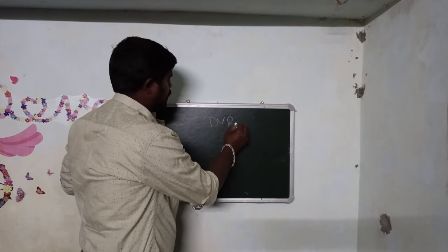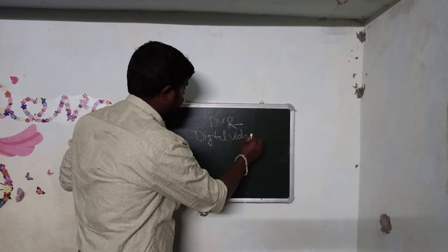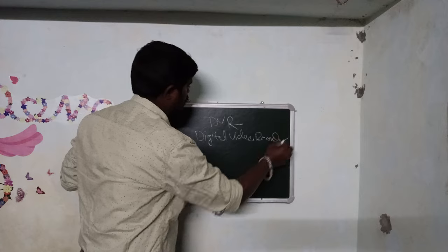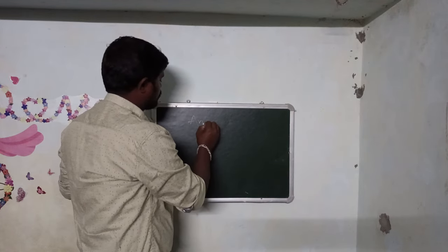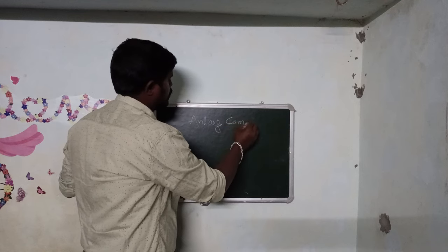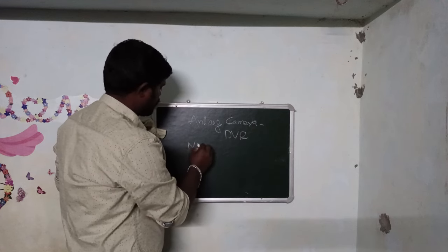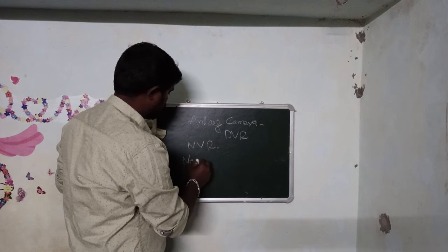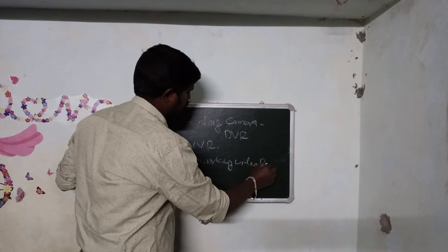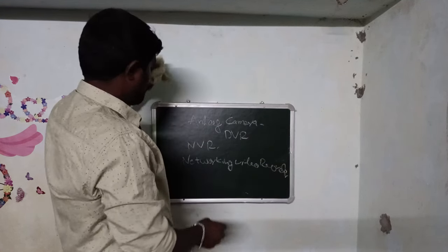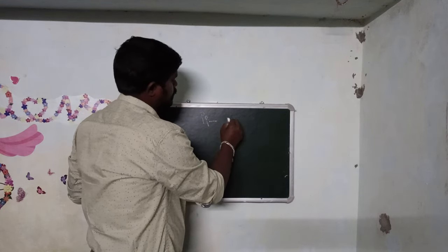DVR is Digital Video Recorder, used for analog cameras. NVR is Network Video Recorder, used for IP cameras. Both can be accessed through mobile apps using power supply.